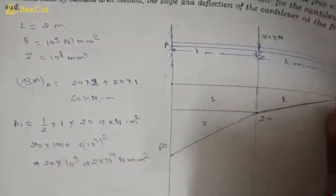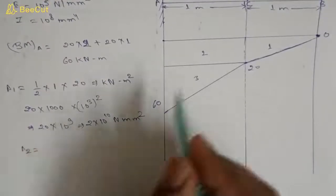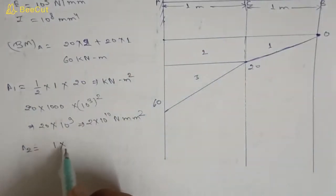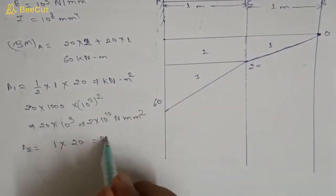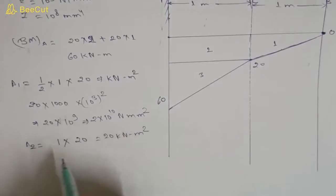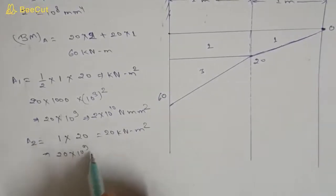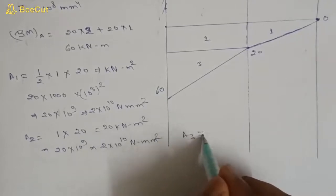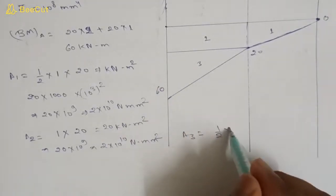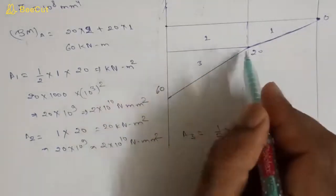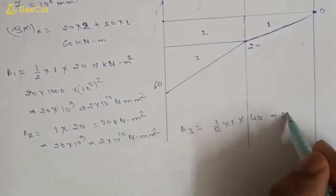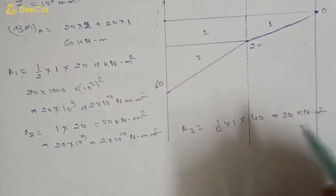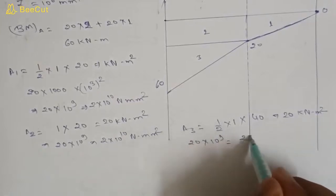Area A2 is rectangular: base into height equals 1 into 20, giving 20 kilo Newton meter square, which converts to 2 into 10 to the power 10 Newton mm square. Area A3 is triangular: half into base into height equals half into 1 into (60 minus 20) = 40, so it becomes 20 kilo Newton meter square, converting to 2 into 10 to the power 10 Newton mm square.